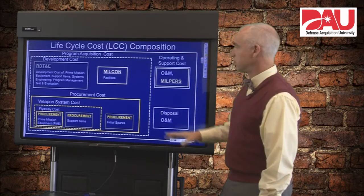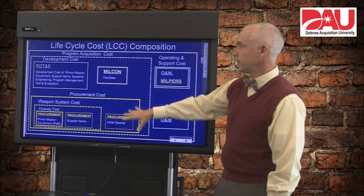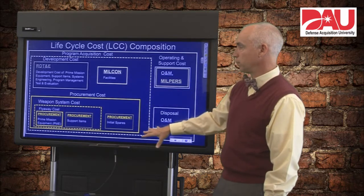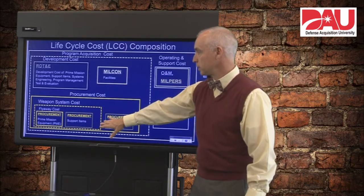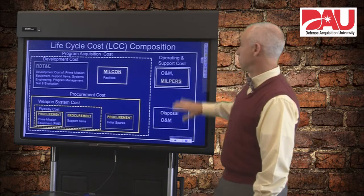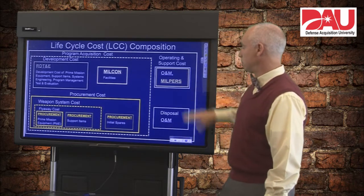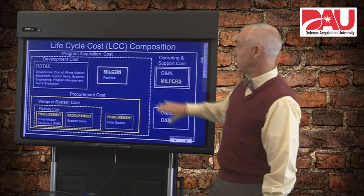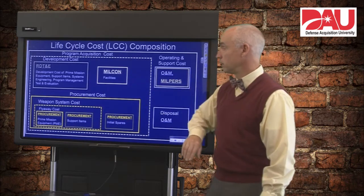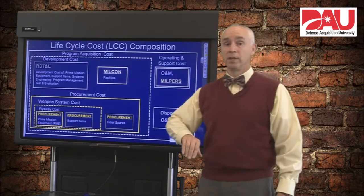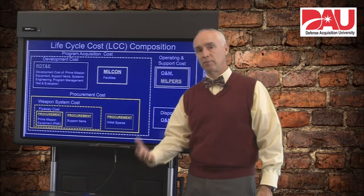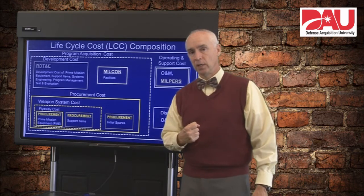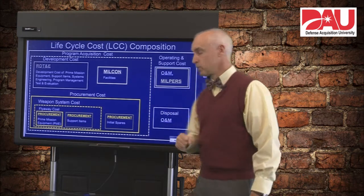Now let's take a look at these different colors of money — the different appropriations: the RDT&E, the procurement, the O&M, the MILPERS, and the military construction. Let's see where we would expect to spend that color of money or appropriation across the lifecycle.